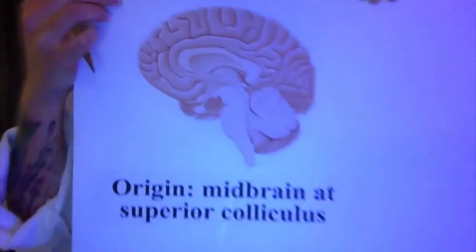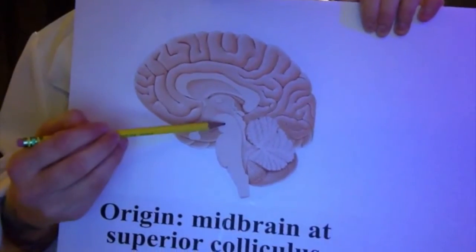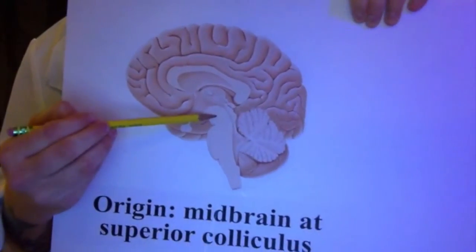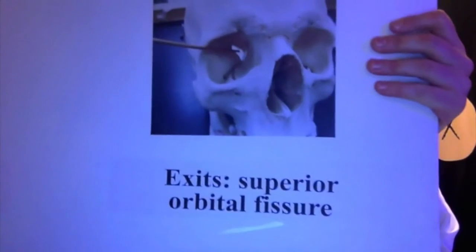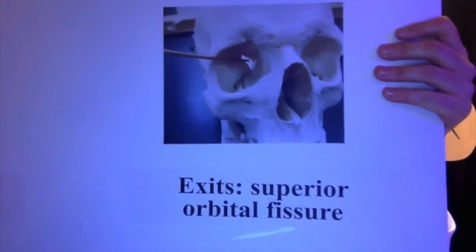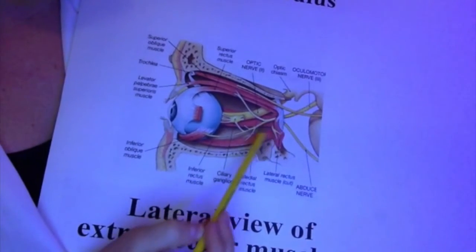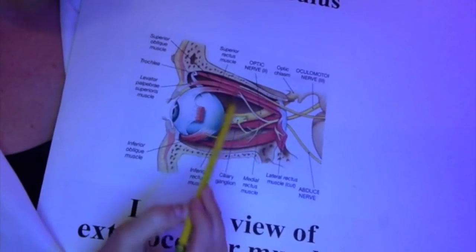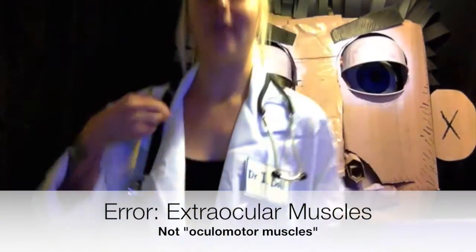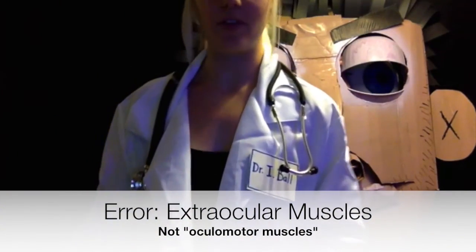Cranial nerve three originates in the midbrain at the superior colliculus. It then exits through the superior orbital fissure of the skull and enters the orbital cavity. As you can see here, the oculomotor nerve comes down and it separates into a superior and inferior branch where it innervates most of the oculomotor muscles of the eye.